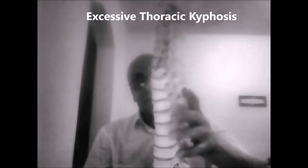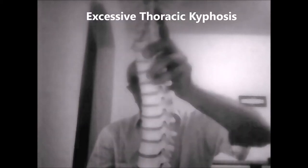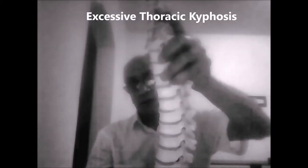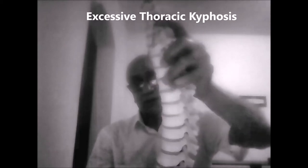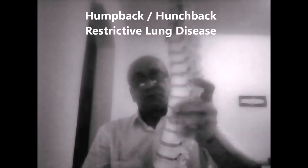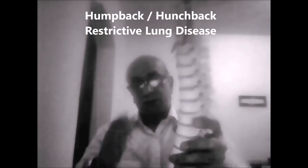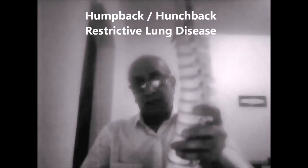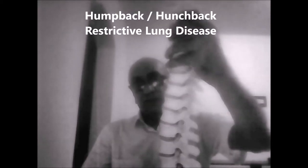Now let's take a look at some abnormalities. One of the abnormalities is abnormal thoracic kyphosis — when the thoracic spine gets abnormally curved forward. That is sometimes associated with hunchback, which I shall tell you about just a little later, and that can produce restrictive lung disease.